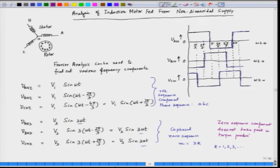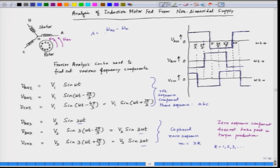Let us try to see what happens when the rotor is rotating at a speed of ω_M and we have a stator field. The stator field rotates at its own speed — from A to B to C — and this is what we call the synchronous speed ω_Ms. The rotor speed follows the stator field. We define slip as: s = (ω_Ms − ω_M) / ω_Ms. This is the definition of slip when we have only one frequency present, the positive sequence component.